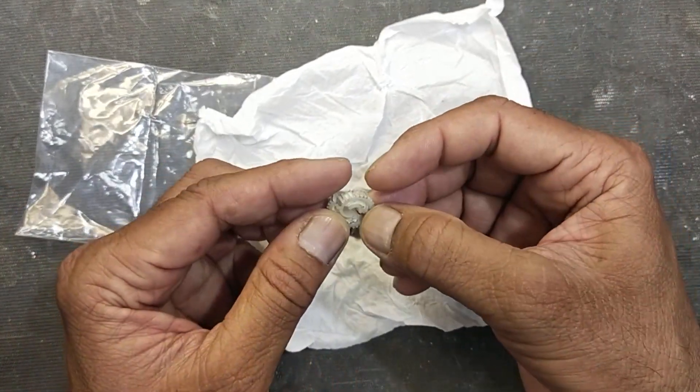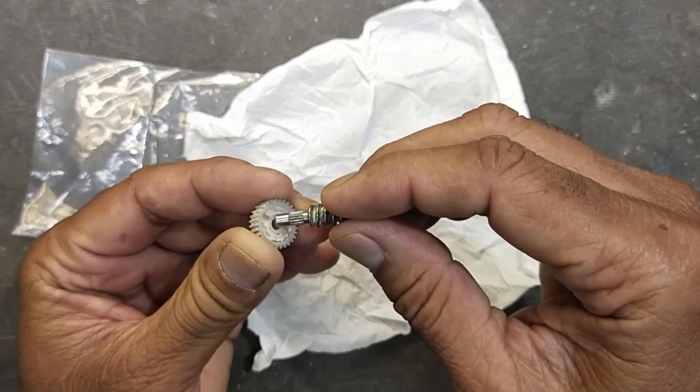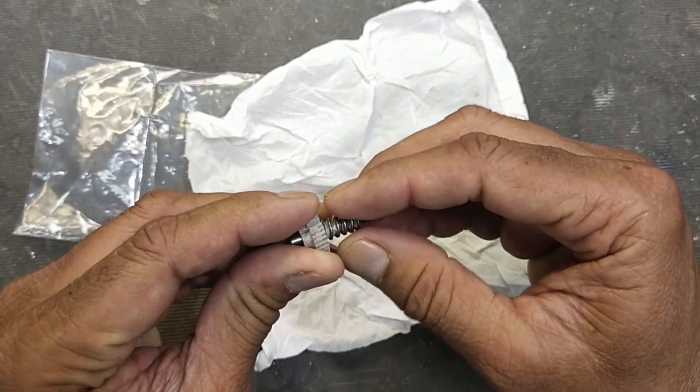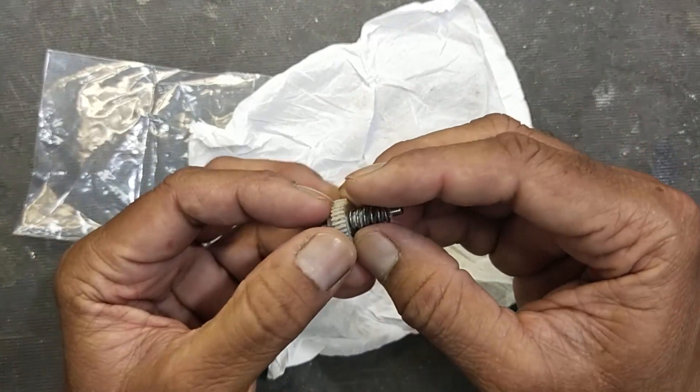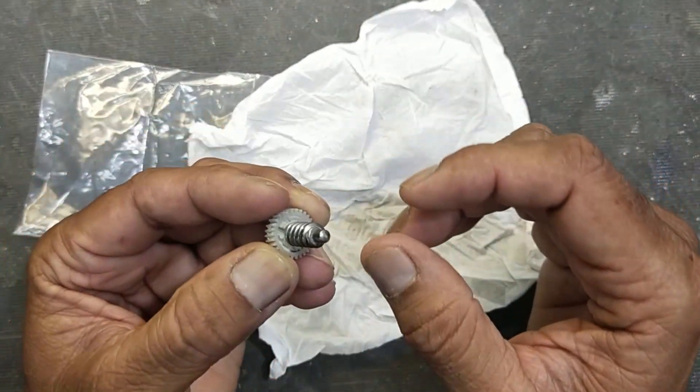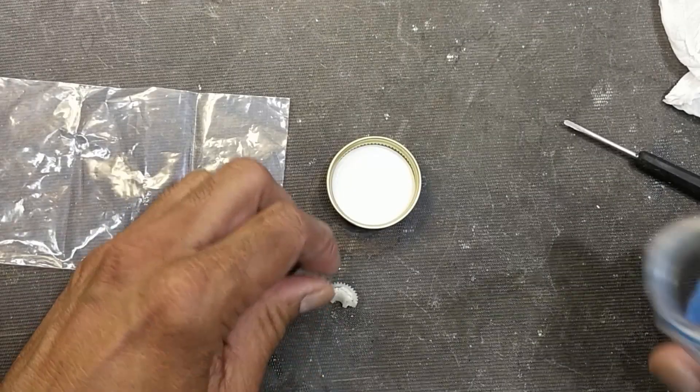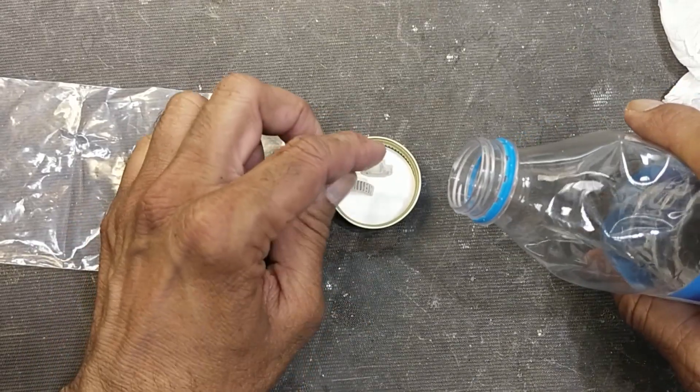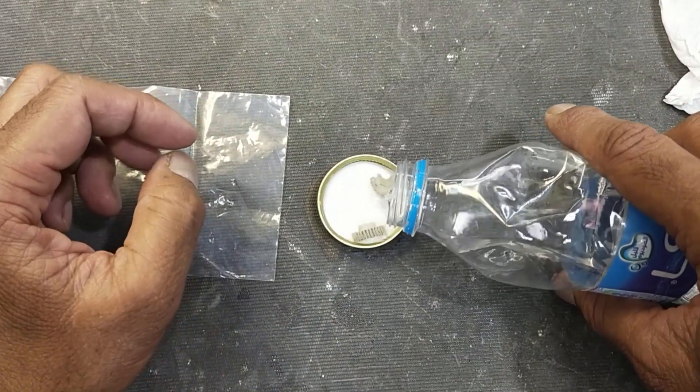This gear is installed on this shaft in this position and it is broken. Let's see how we can fix it. In the first step, I will clean it because it has grease. I will use isopropyl alcohol to clean it.